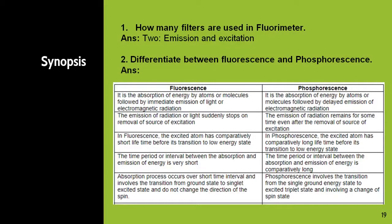Now let us see some questions for synopsis. How many filters are used in fluorimeter? Two filters are used: excitation, that is primary filter, and emission, that is secondary filter. Differentiate between fluorescence and phosphorescence. Fluorescence is the absorption of energy by atoms or molecules followed by immediate emission of electromagnetic radiation. Phosphorescence is also the absorption of energy by atoms or molecules but followed by delayed emission of electromagnetic radiation. In fluorescence, emission of radiation suddenly stops on the removal of the source of excitation.